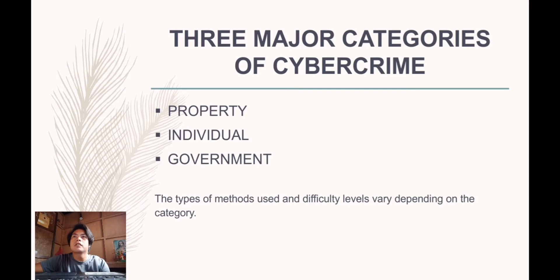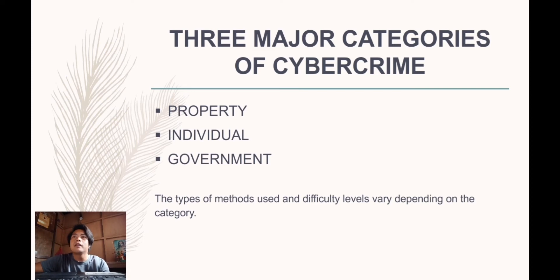There are three major categories of cybercrime: individual, property, and government. The types of methods used and difficulty levels vary depending on the category. First is property. This is similar to a real-life instance of a criminal illegally processing an individual's bank or credit card details. Hackers steal a person's bank details to gain access to funds, make purchases online, or run phishing scams to get people to give away their information.